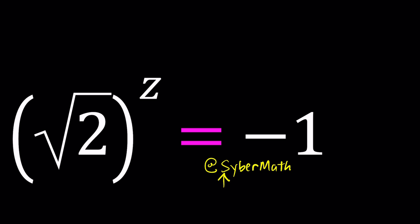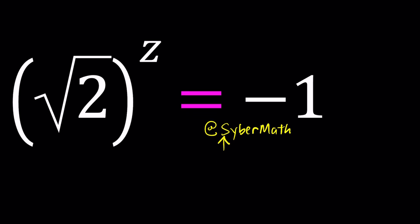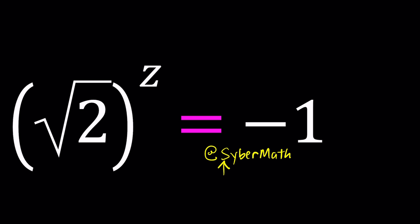Now to be able to solve an equation like this we're going to use the polar form. But let me ask you some questions first. Can we square both sides? Why?